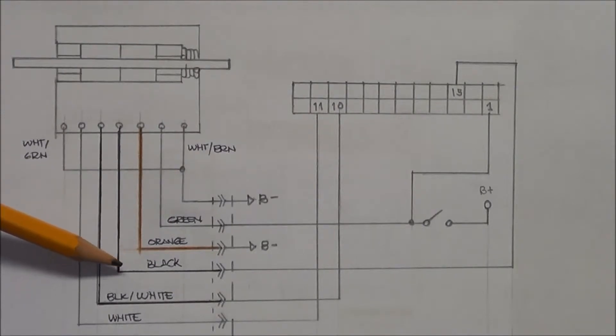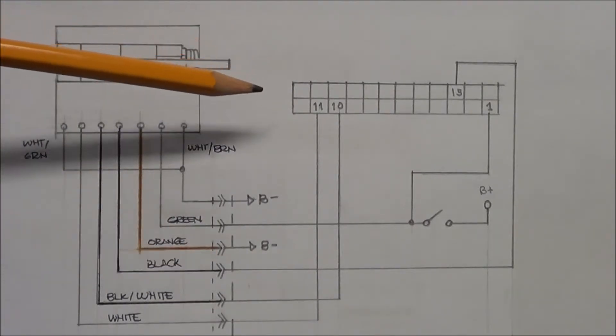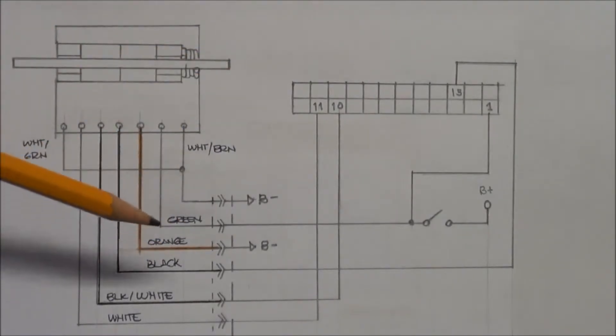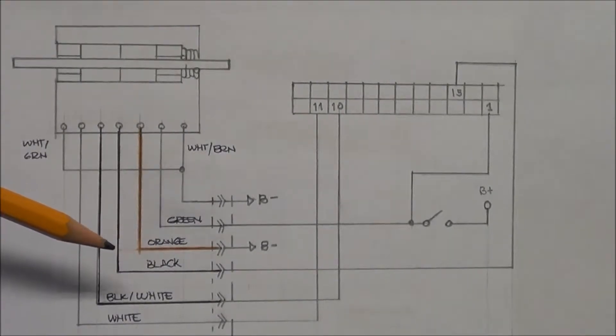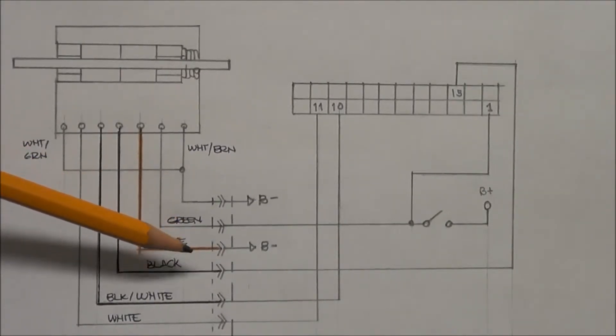So black goes to pin number 15 on the controller, and this is the signal wire which gives the signal for the controller as far as the speed that you want to go. So the output should be from 0 to 5 volts, 0 meaning there is no request for speed. So 0 can be considered as neutral and 5 volts would be 100% throttle, as fast as you can go.